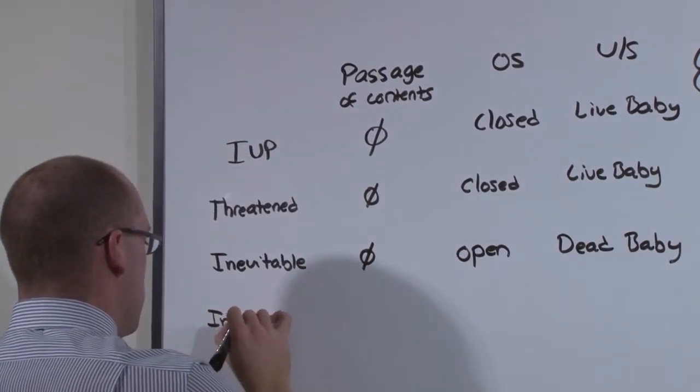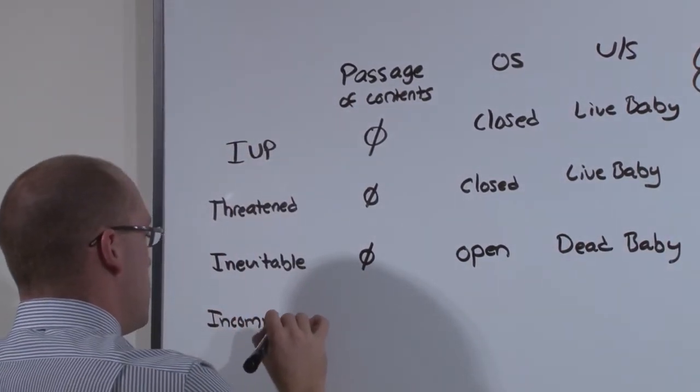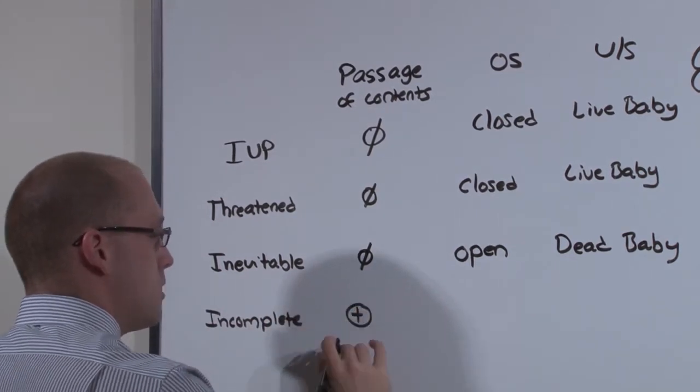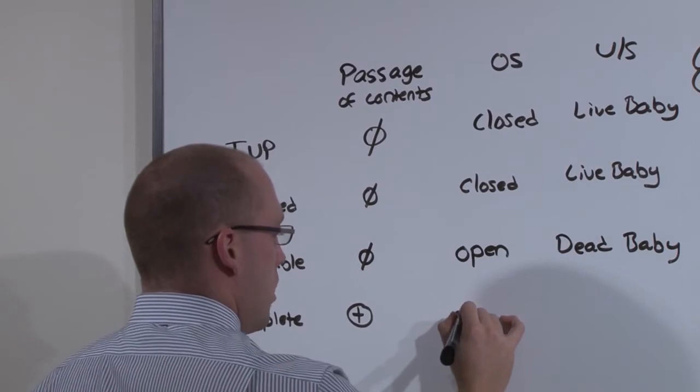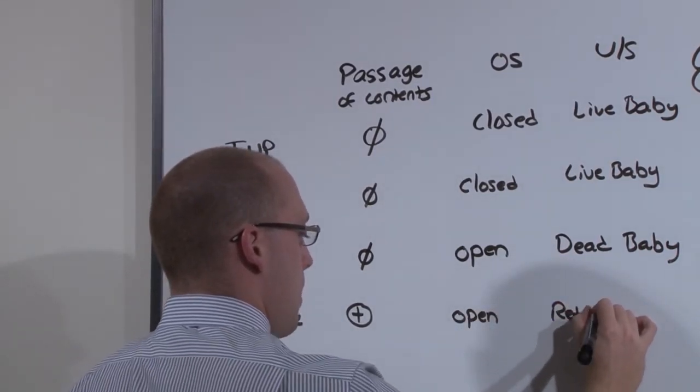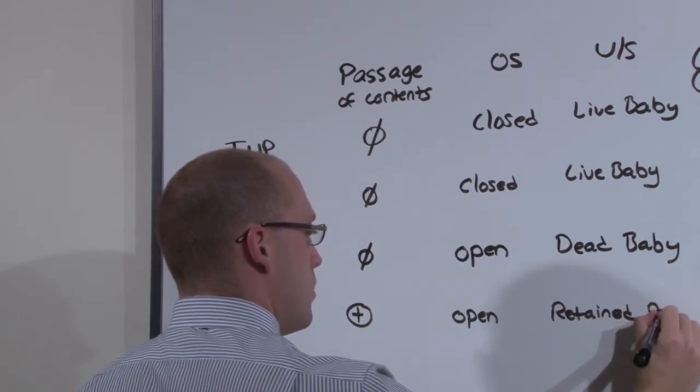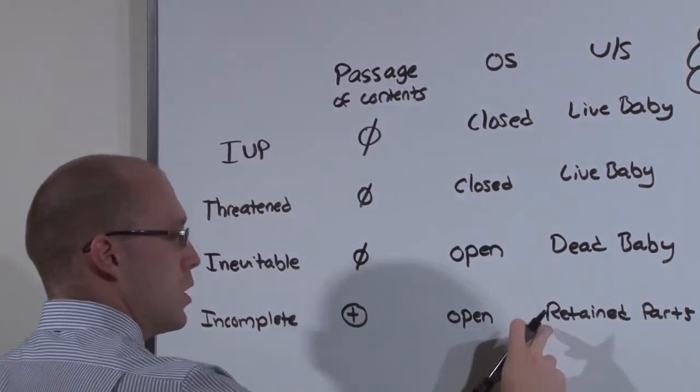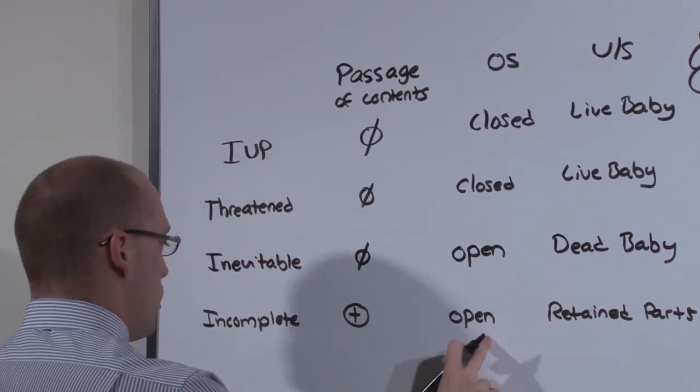In the incomplete phase, the dead baby is being expelled. There has been some passage of contents, but mom is not done. Her os is still open, and there may be retained parts. This is a continuous process from inevitable to complete, so until all of the fetal parts are expelled, the os will remain open.